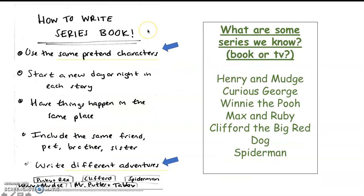So how do we write series books? We always use the same pretend characters. In the Henry and Mudge books they only use Henry and Mudge, so in your series books you should use the same characters. If your character is Tom, it should be Tom in each story — Tom does this, Tom does something else, Tom does another something else. They start a new story in each book. You can have things happen in the same place, include the same character, their same friend, their same pet, brother, or sister, but in each book you want to keep it the same. And then you also write down different adventures.